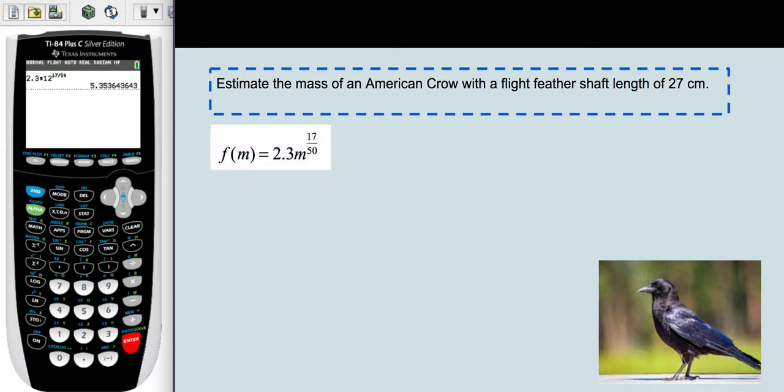In our function, f(m) = 2.3m^(17/50), 27 is the replacement for f(m), the output. We'll write 27 = 2.3m^(17/50), and then we need to start solving for m. This is going to take us a couple steps.